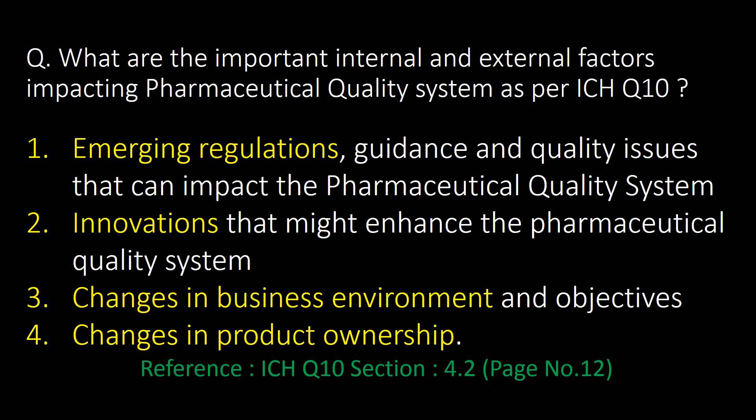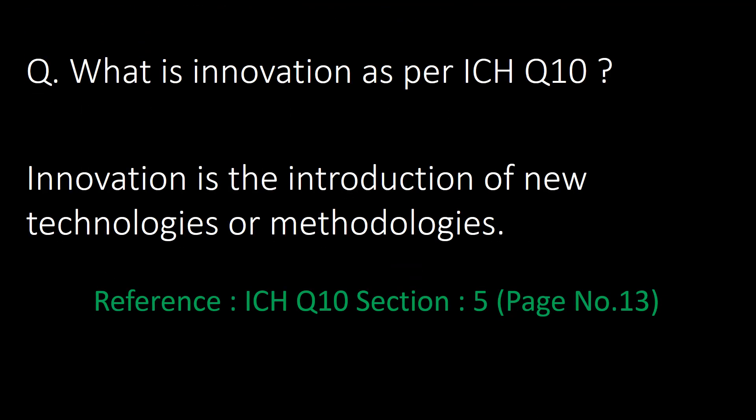What are the important internal and external factors impacting the pharmaceutical quality system as per ICH Q10? Emerging regulations, innovations, change in business environment, and change in product ownership are the important internal and external factors. What is innovation as per ICH Q10? Innovation is the introduction of new technologies or methodologies.